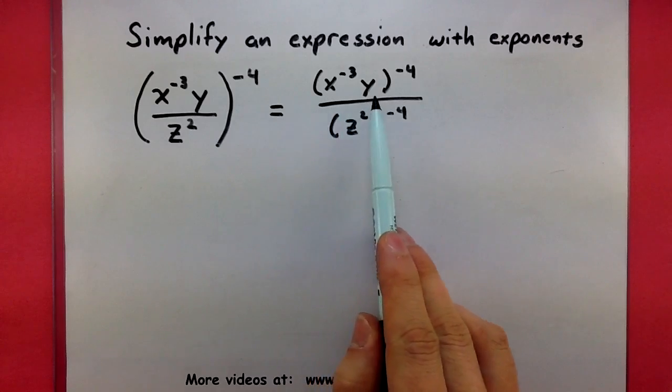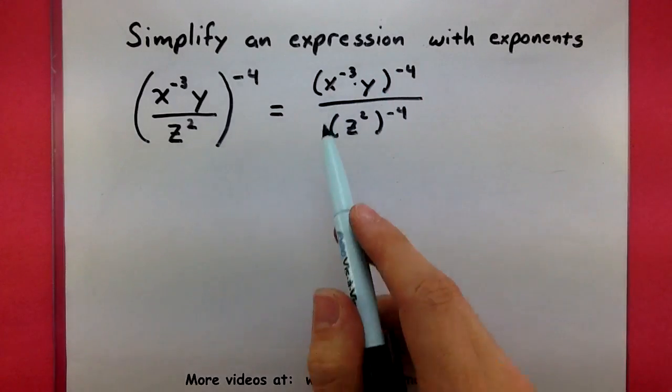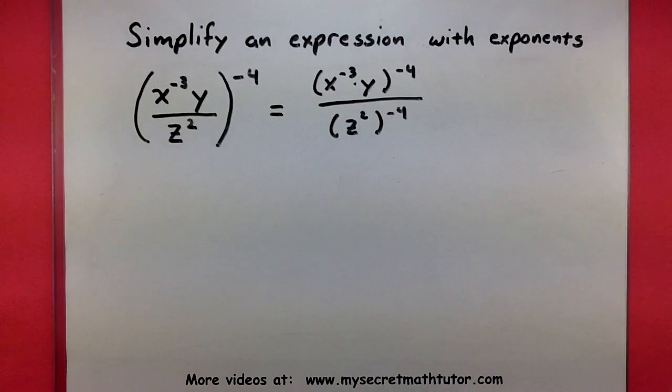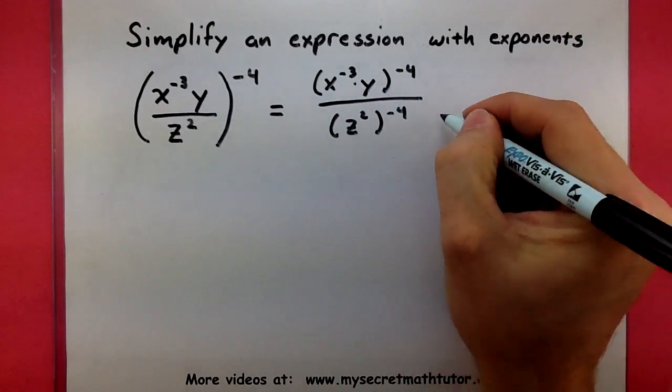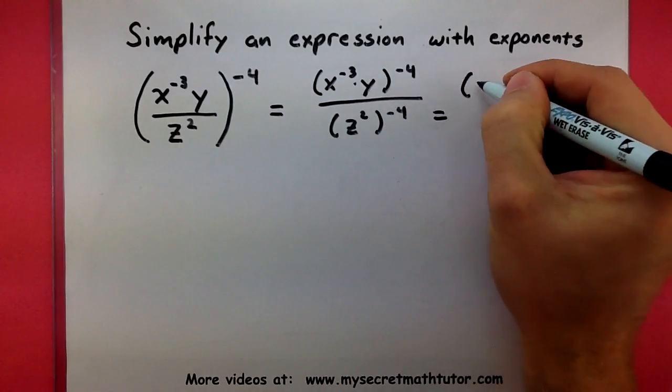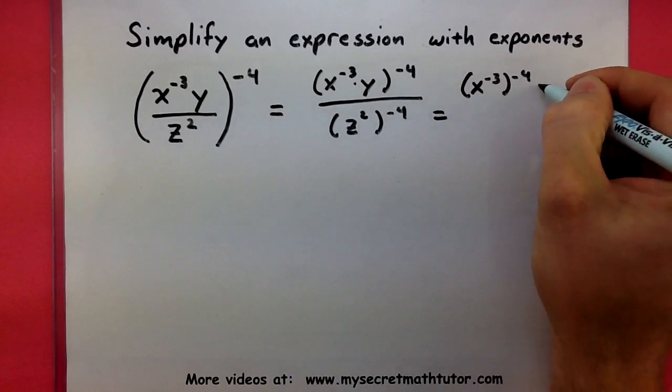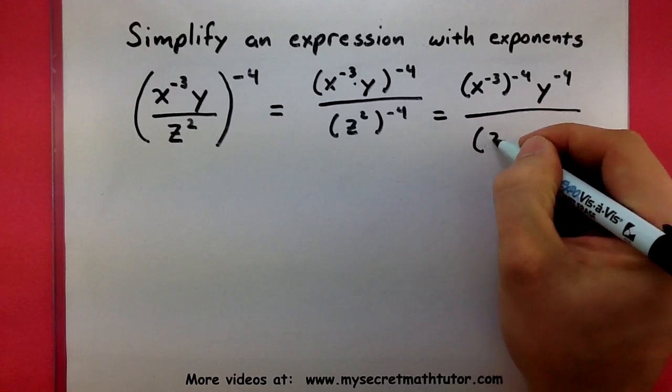Now, up top here, notice how I have two things that are being multiplied, and they're also in turn being raised to the power of this negative 4. Well, I can use the product rule to give the negative 4 to each of these, the x and the y.